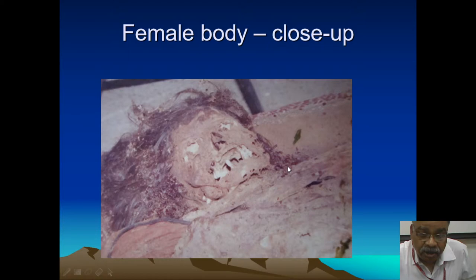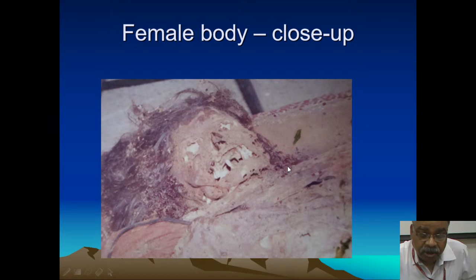Another case shows a dismembered female body — post-mortem dismemberment disposed of at different sites in Delhi and recovered for examination. There was destruction of the nose — nose cutting superimposed by decomposition changes, suggesting honor killing. After collecting all the parts and putting them in anatomical position, all parts were matching.